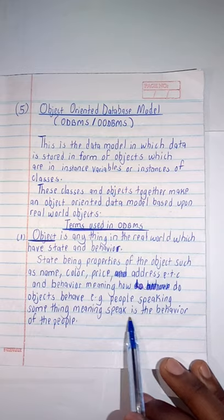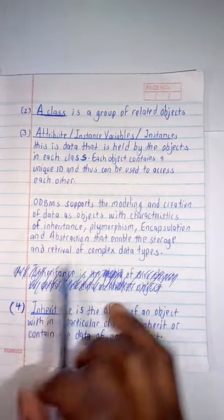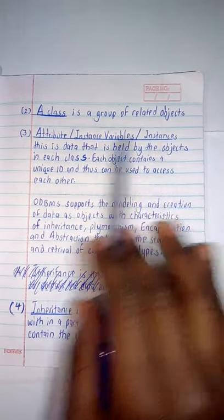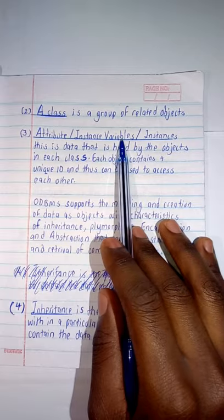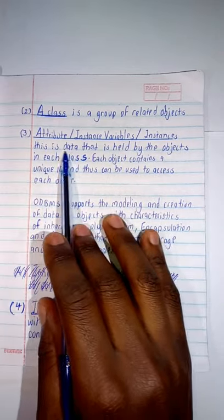Then we have a class. A class is a group of related objects. Attributes or instance variables are the data that is stored by the objects in each class.